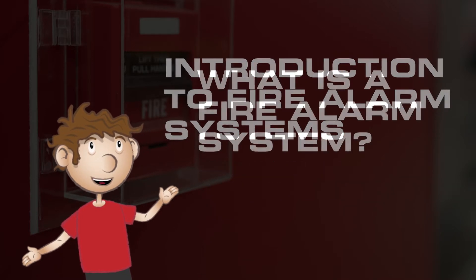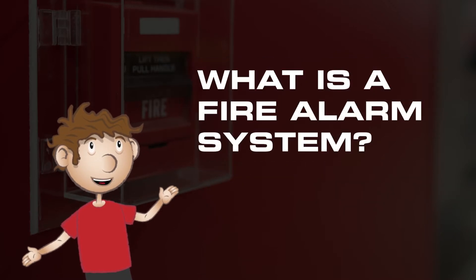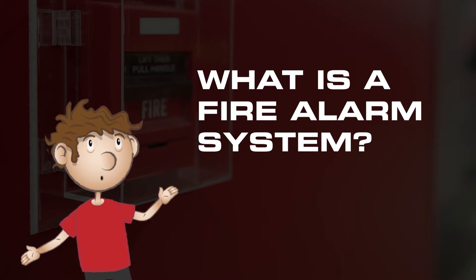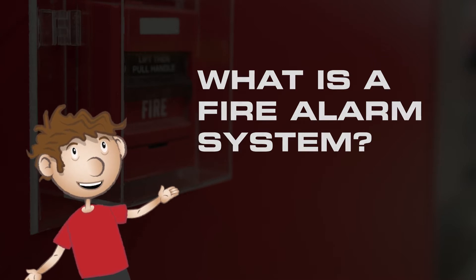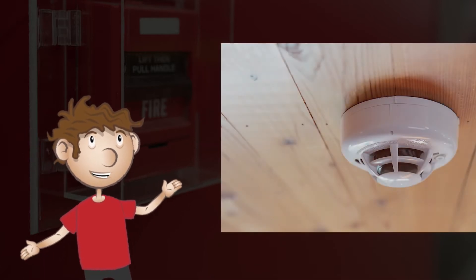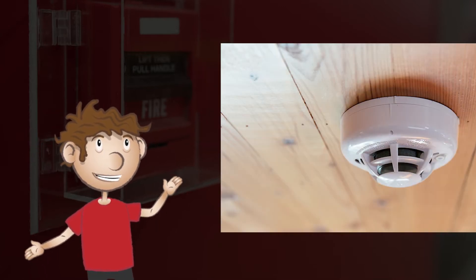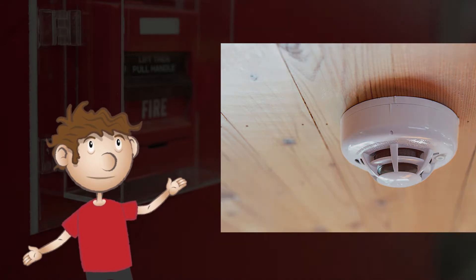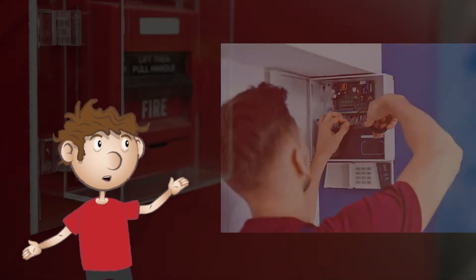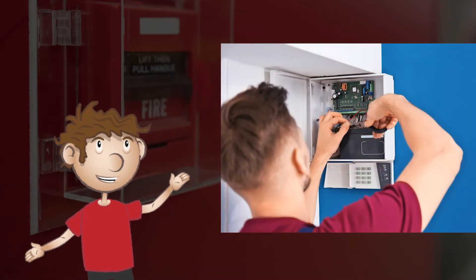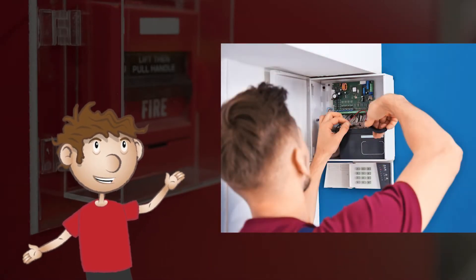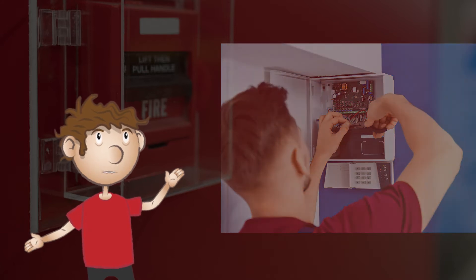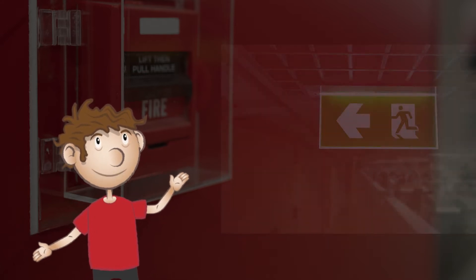So let's begin with what is a fire alarm system? A fire alarm system is made up of devices such as heat or smoke detectors and pull stations, which indicate to a control panel that a fire has been detected and then alert the building occupants to evacuate via audible or visual signaling devices.